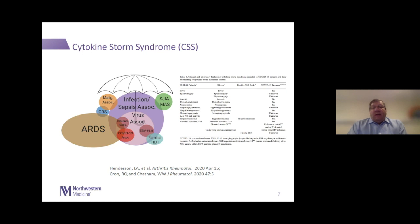HLH was recognized a number of years ago. There are some classification criteria and something called an H-score which predicts prognosis. These were developed specifically for HLH not associated with malignancy or infection, so you have to be cautious about using them. But it highlights many of the different features seen across this syndrome, including fever, anemia, thrombocytopenia, and other cytopenias that we also see with COVID-19.